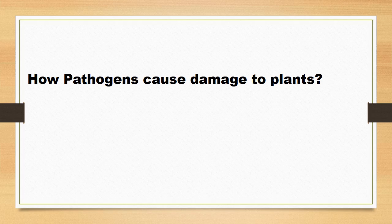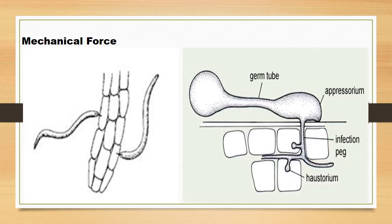Pathogens overcome this deficiency by developing different ways or weapons to damage their host. What these ways and weapons are, we are going to discuss. The first way is the use of mechanical force, but remember that only a few pathogens use mechanical force — examples include nematodes and some fungi.